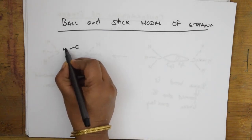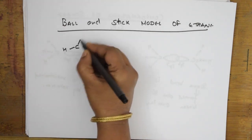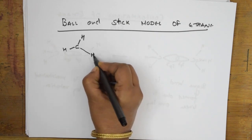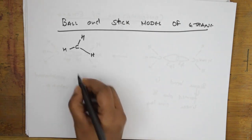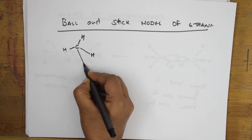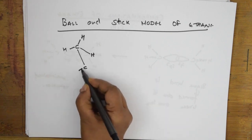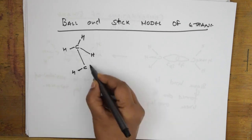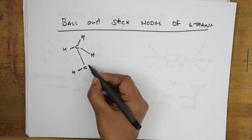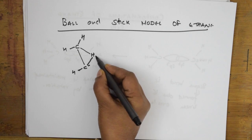After a 60-degree rotation from the fully eclipsed form, we get the gauche form. Rotating another 60 degrees gives us the third conformation — partially eclipsed — where hydrogen and CH3 groups are partially overlapping. Rotating yet another 60 degrees gives the fourth conformation: anti-staggered, where groups are equally spaced — the anti form.